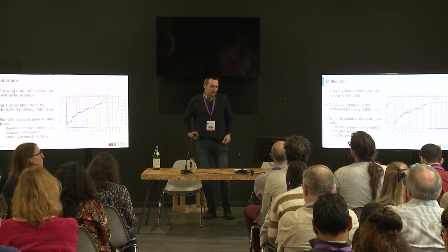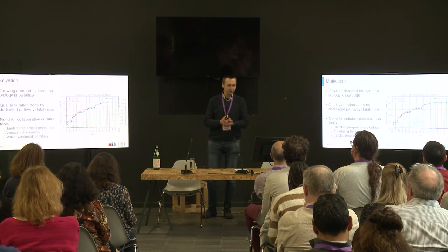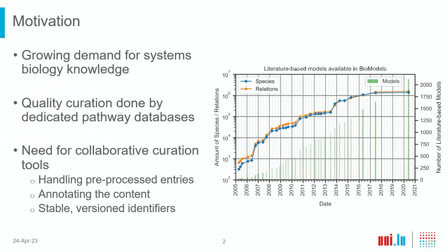This is a typical growing graph, which shows you that things are important. This is for biomodels, and the thing is that we need more and more quality curated knowledge. At this moment, a lot of this curation is happening in a resource-dependent manner — there is a database for that, and there are a couple of curators associated with it.